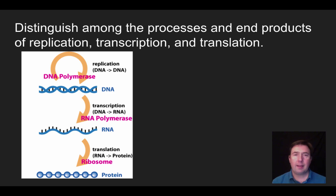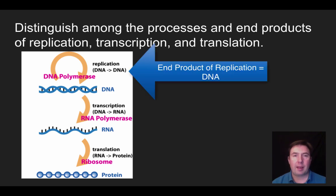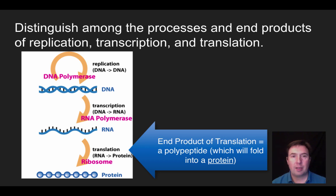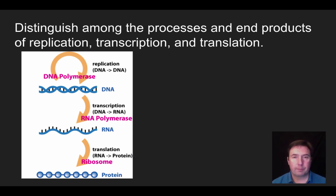Let's distinguish the end products of replication, transcription, and translation. In replication, we use DNA polymerase to make DNA from DNA — the endpoint is another molecule of DNA, going from one molecule to two. At the end of transcription, we have made an mRNA molecule — we start with DNA and end with mRNA. The end product of translation is a polypeptide, a series of amino acids that ultimately makes a protein — we start with RNA and end with a protein. Hopefully that is helpful, and I will talk to everybody soon.